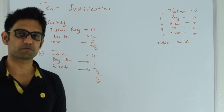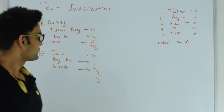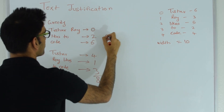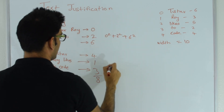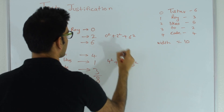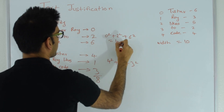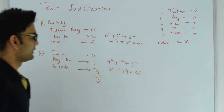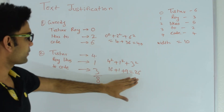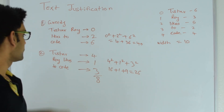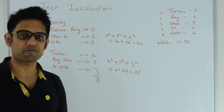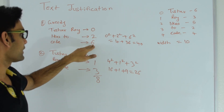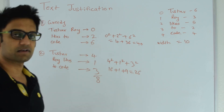Since the sum of empty spaces is the same for both, let's try summing the squares of empty spaces. For the greedy arrangement: 0²+2²+6² = 0+4+36 = 40. For the alternate arrangement: 4²+1²+3² = 16+1+9 = 26. So the alternate arrangement is better because 26 is less than 40. We are going to use the sum of squares of empty spaces on each line to measure the 'badness' of an arrangement — more empty spaces on a line makes the squared penalty much worse.